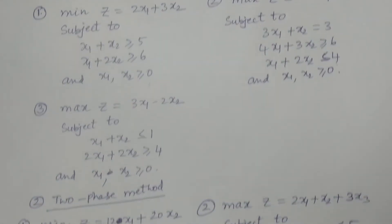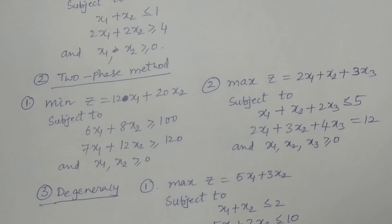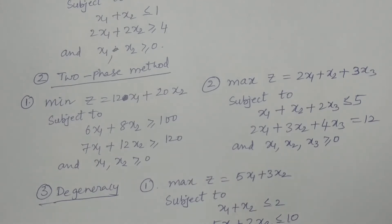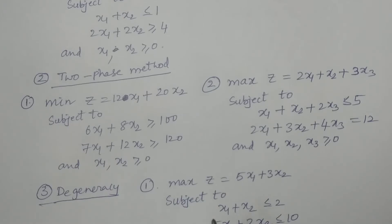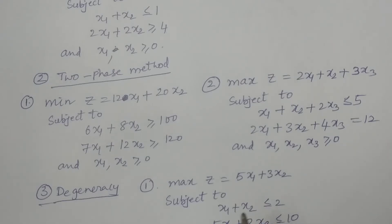For the two-phase method, similar kinds of problems apply. Big M and two-phase are two different methods to solve an LPP which involves artificial variables — that is, either ≥ or = constraints must appear in the LPP for it to be solved using Big M or two-phase method.